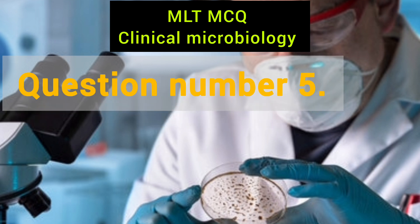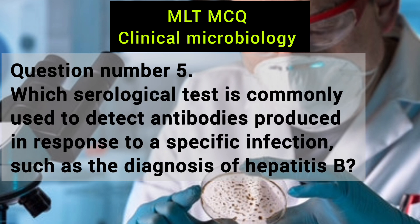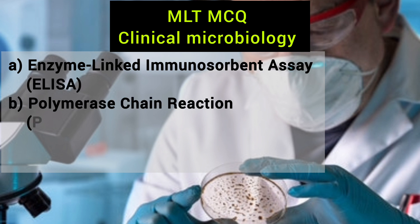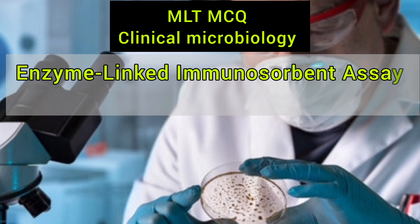Question number 5. Which serological test is commonly used to detect antibodies produced in response to a specific infection, such as the diagnosis of hepatitis B? a. Enzyme-linked immunosorbent assay (ELISA), b. Polymerase chain reaction (PCR), c. Western blot, d. Agglutination test. The right answer is Enzyme-linked immunosorbent assay, ELISA.